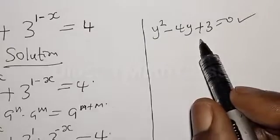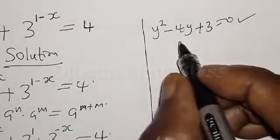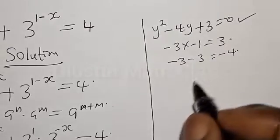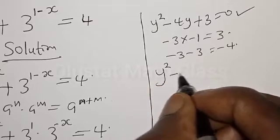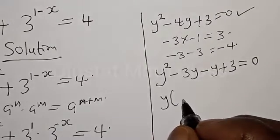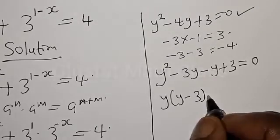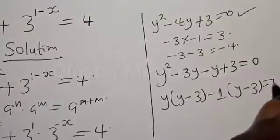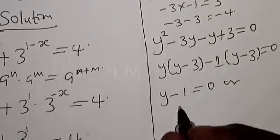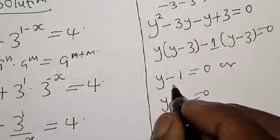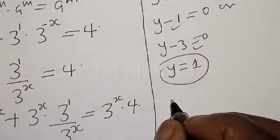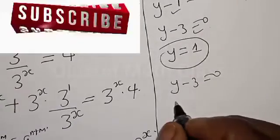Let's solve this by factorization. We look for two numbers such that the product is plus 3 and the sum is minus 4. Minus 3 multiplied by minus 1 gives 3, and minus 3 plus minus 1 gives minus 4. Therefore our equation becomes y squared minus 3y minus y plus 3 equals 0, which factors as y(y minus 3) minus 1(y minus 3) equals 0. Therefore y minus 1 equals 0 or y minus 3 equals 0, giving y equals 1 or y equals 3.